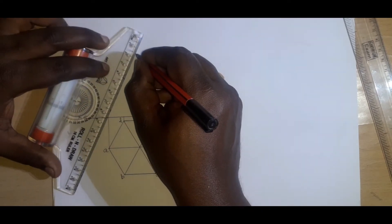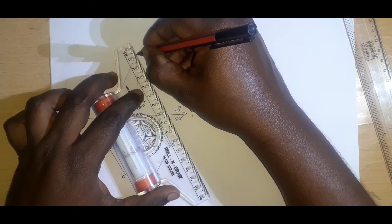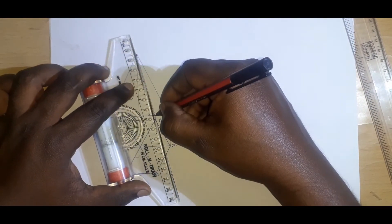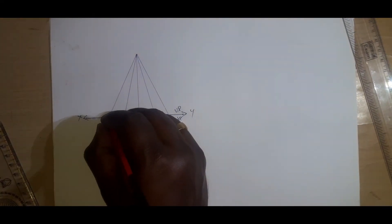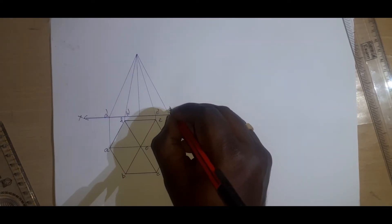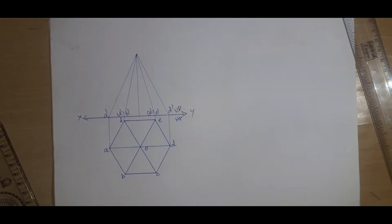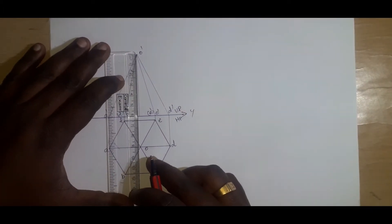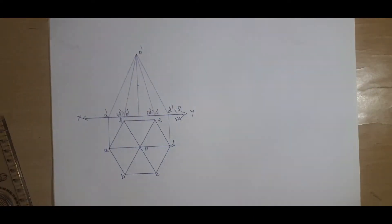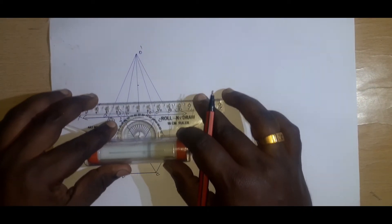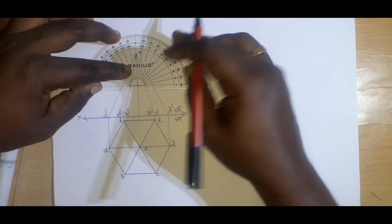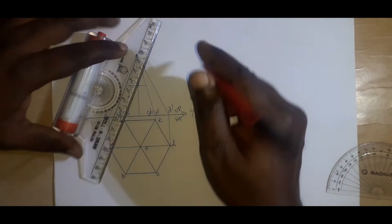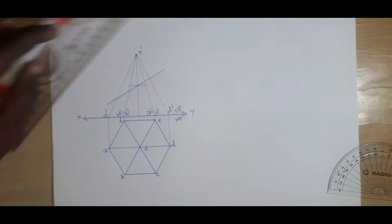Join with thin lines initially because the top portion will be removed. Next label A-dash, B-dash, C-dash, D-dash, E-dash, F-dash, and O-dash. At the middle — 30mm from the base — make a mark, then draw a small horizontal line as a locus. Keeping the protractor, find the 30-degree inclined cutting plane. Now find out the intersecting points. The bottom part will be remaining and the top part will be removed.